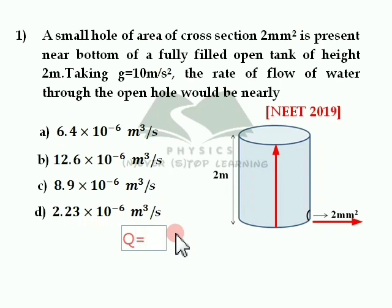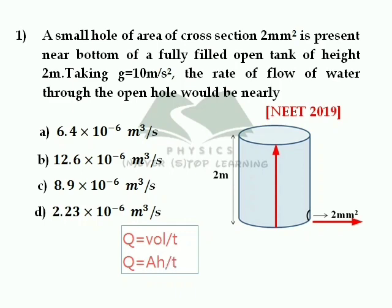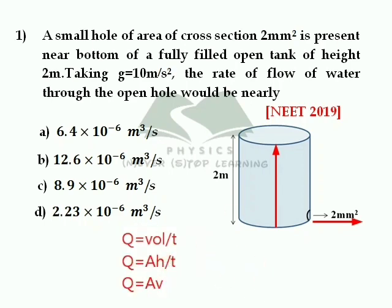The rate of flow of water, q, is the volume of water flowing out per second. Volume can be written as area into height, so volume per second is area into height by time. Height by time is distance by time, which is nothing but speed. Therefore, we got an expression for rate of flow of water: q equal to area into speed.